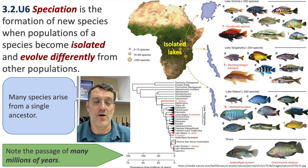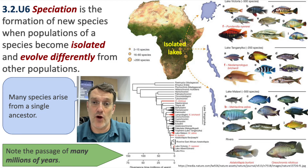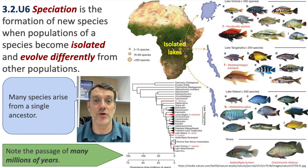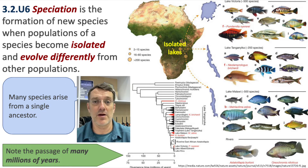This happens over many millions of years and many generations. If the environmental pressure is great enough on one population, it will eventually become a new species, because the genes will have shifted enough that the population can no longer successfully interbreed and produce fertile offspring.